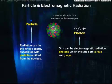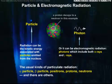What are the usual kinds of particulate radiation? Well, there's alpha particles, beta particles, positrons, protons, neutrons, and there are others.